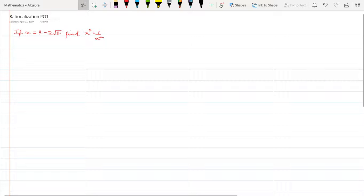Hello friends, today let's take a practice question to understand the concept of rationalization slightly better. The question is: if x is equal to 3 minus 2 root 2, find the value of x squared plus 1 upon x squared.